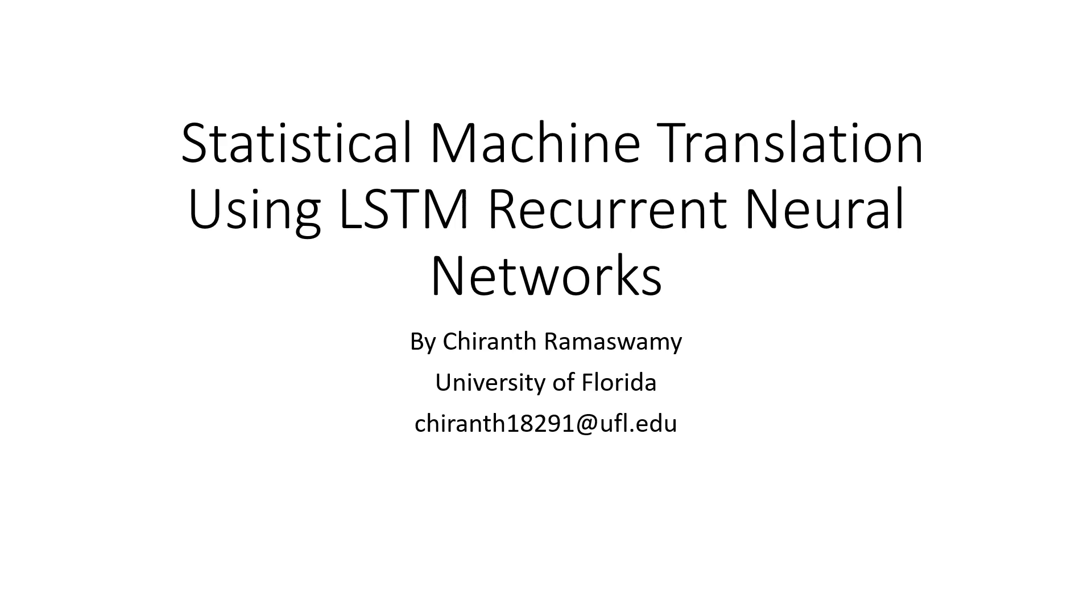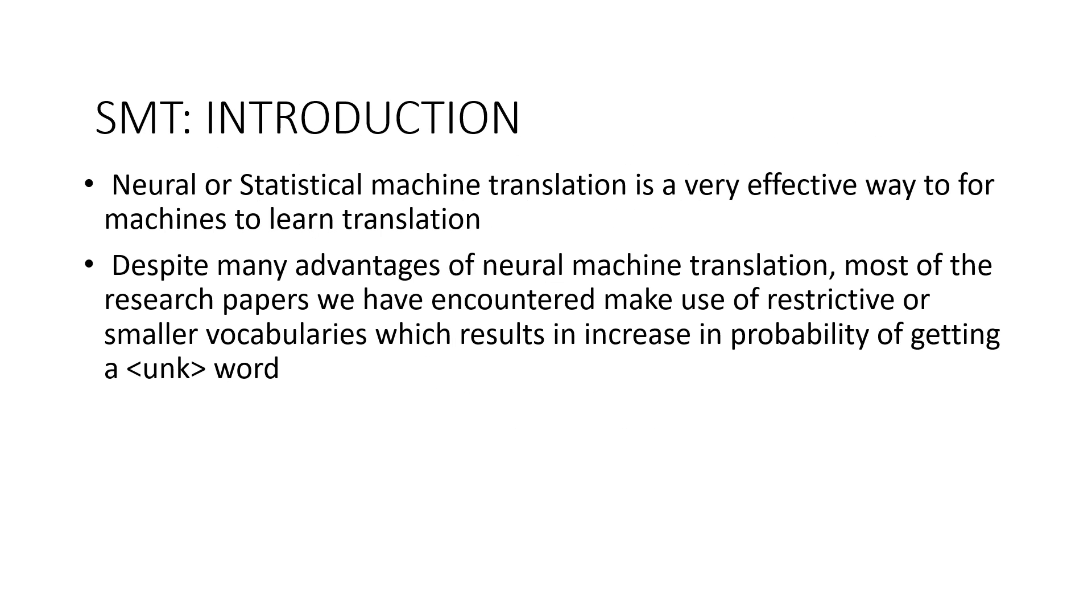Neural or statistical machine translation is a very effective way to have machines learn translation from a particular source language toward target language. In most of the traditional statistical machine translations, as we are using restricted libraries or small libraries, the probability of getting an unknown word for special cases is more.